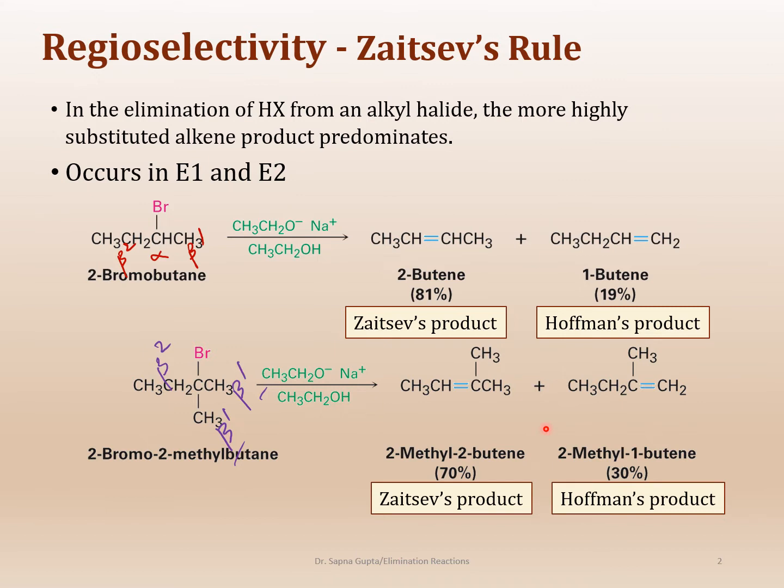Zaitsev's rule rules - you're going to have the more substituted alkene as your major product in regioselectivity. When do you have regioselectivity? You can have that in both E1 and E2. It doesn't matter.